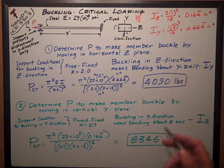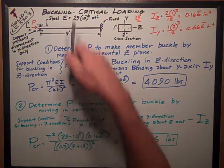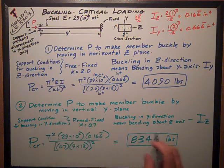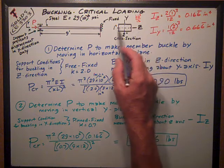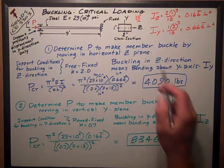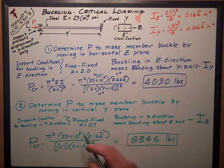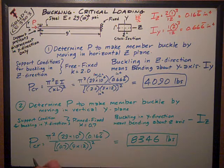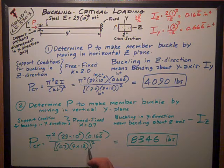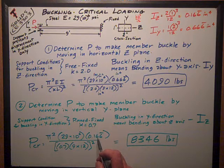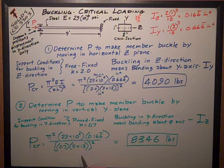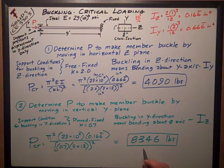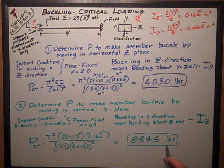Similarly to up here, buckling in the Y direction, up and down, means bending about the Z axis. If it's going to buckle in the Y direction, it's going to bend about the Z axis. So we're going to use IZ in our formula. Substituting those numbers into this equation, this is IZ, and this is the effective length factor for this buckling, 0.7. It's 8,346 pounds.